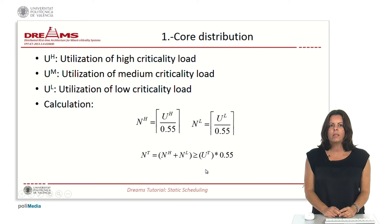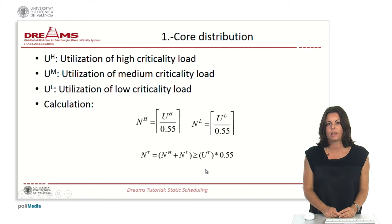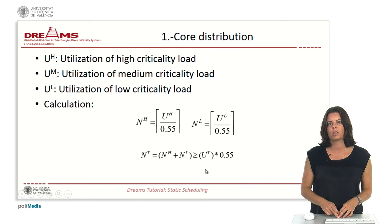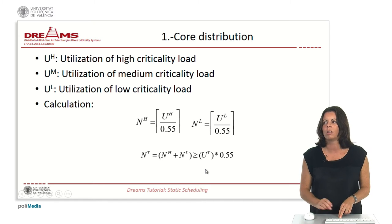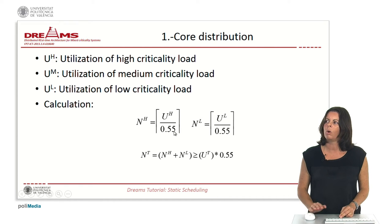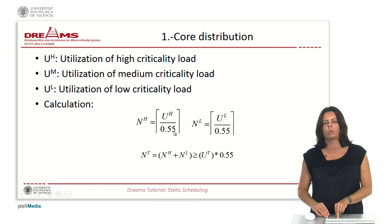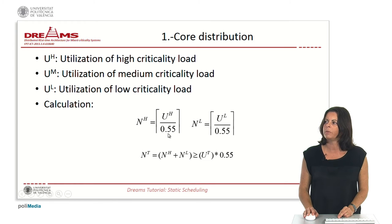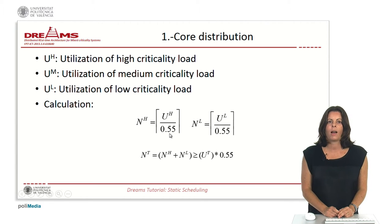The calculation is done following existing papers in the literature. It is clear that the higher the utilization, the higher the number of cores. In the literature we have found that the relationship is to divide the utilization factor by a number in the range between 0.48 and 0.60. We have chosen a medium value of 0.55. With these equations we will find the number of cores for the high criticality level partitions and the low criticality level partitions.